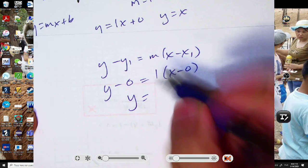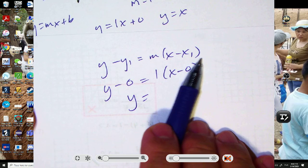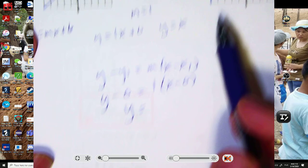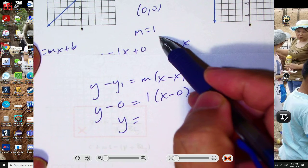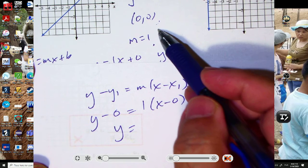Y minus 0 is y. Sorry about that. Start again. So this is the point-slope form. I found a slope to be m equals 1. It goes to the origin, 0, 0. So that's my point.